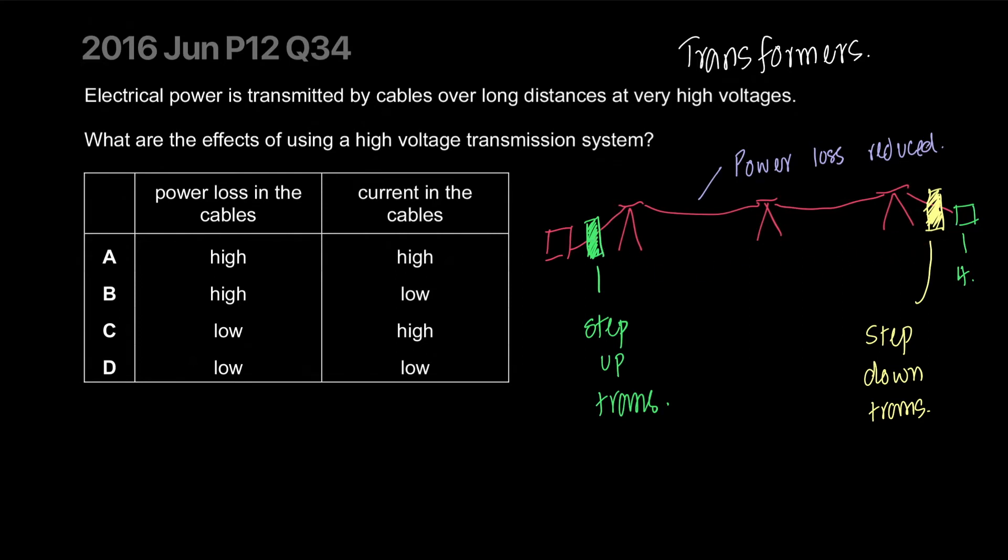This also allows you to use thin wires. The poles carrying wires - these current carrying wires are very thin, and these transformers allow it. Long story short, the power losses in the cables are at a minimum and the current in the system is also at a minimum. That's why you use a transformer. Let's move on.